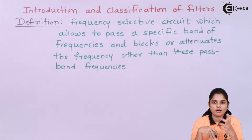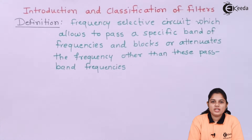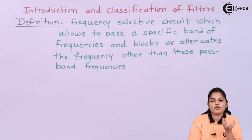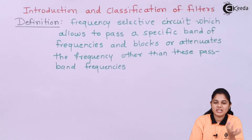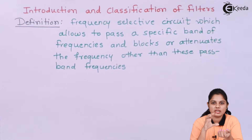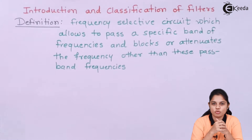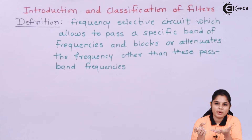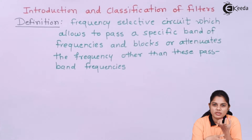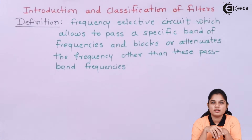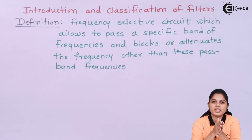Basically a filter will pass some things and block others. For example, in normal day-to-day life we use filters — if you have boiled water and want to filter out the white residue, you use a cloth or filtering instrument. The water passes through the cloth but the white component remains on it. That is filtering.